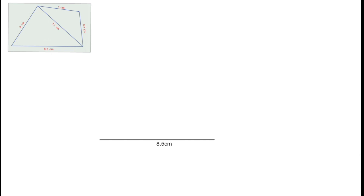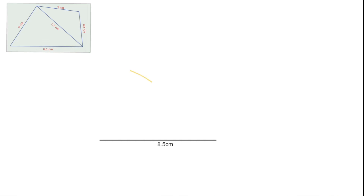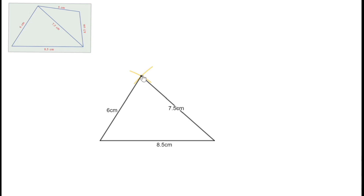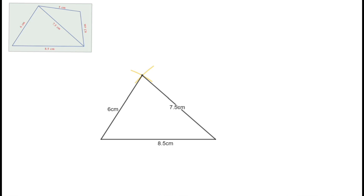Now the second part: one side is 8.5 cm, so draw a line of 8.5 cm. Another side adjacent to it is 6 cm — using the compass take 6 cm and draw an arc. The other side from the other end is 7.5 cm — draw another arc and mark the intersection, then join it to the ends of the baseline. From this vertex the distance is 5 cm, and from the other vertex the length is 4.5 cm — draw arcs and mark the intersection. Join it to get the required quadrilateral, then draw a diagonal to divide it into two triangles.